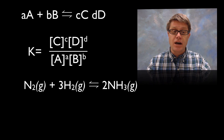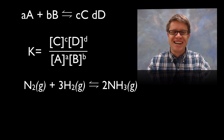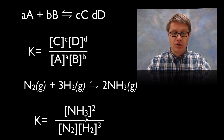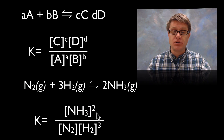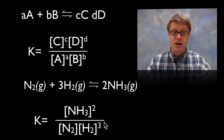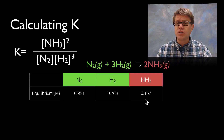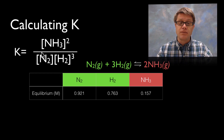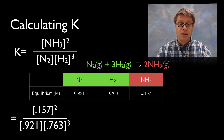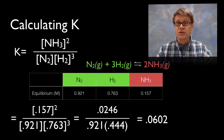Could you solve that for the Haber process and figure out our equilibrium constant? The answer looks like this: since we have only one product, only one term goes on top — ammonia raised to the second power — divided by hydrogen raised to the third power times nitrogen raised to the first power. To calculate K numerically, these are the molar values at equilibrium. We write out the expression, plug in 0.157 for ammonia concentration, and multiplying out we get K ≈ 0.0602 (three significant digits).